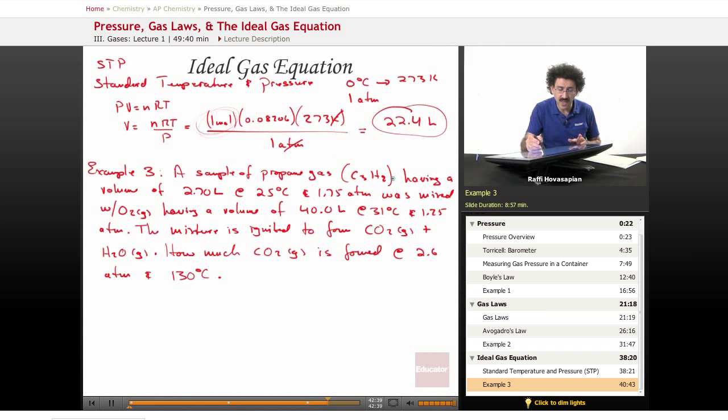I have a sample of propane gas sitting in 2.7 liters at 25 degrees Celsius and 1.75 atm. That's in one vial. In another vial, I have 40 liters of oxygen gas at 31 degrees Celsius, 1.25 atm. I mix them together and raise the pressure to 2.6 atm, 130 degrees Celsius. I want to know how much CO2 is formed.